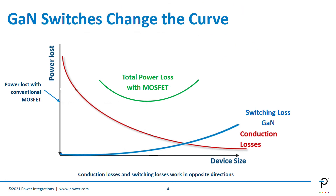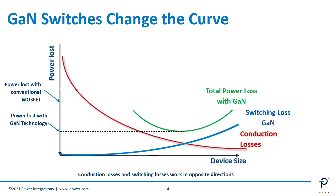GaN changes the equation because as device size gets bigger, obviously your conduction goes down, but your switching losses don't increase at the same rate. What you end up with is a completely different power curve, and that gives you a fundamental advantage that MOSFETs just can't beat. That means you can use more channel, more conductivity, without the penalty of increased switching losses.